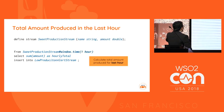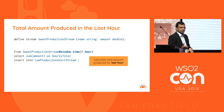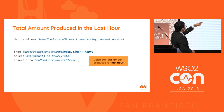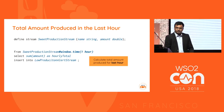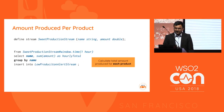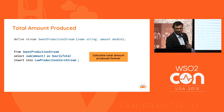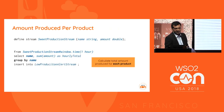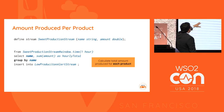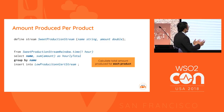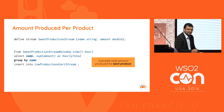Since we want to calculate the total amount produced in the last hour, we add a time window of one hour. By adding this window, we calculate the total amount for the last hour. Furthermore, to calculate the total amount per product, we add a group by on 'name' - calculating total production for each product for the last hour.